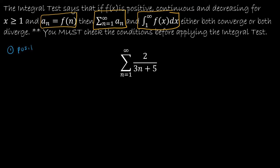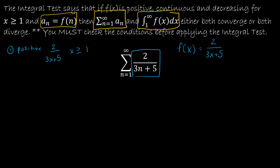For the first condition — positive — I'm going to think of f(x) as 2 over (3x + 5). Is f(x) positive? Well, 2 over (3x + 5) for x ≥ 1: the numerator is 2, which is positive, and the denominator is at minimum 3 + 5 = 8, which is also positive. A positive over a positive gives a positive result, so f(x) > 0 and that condition is met.